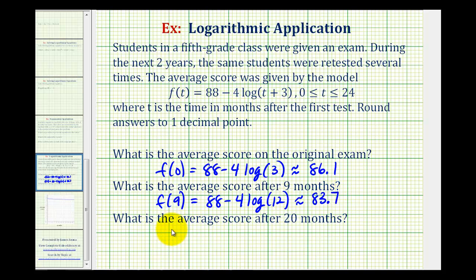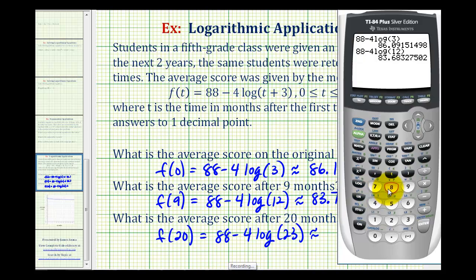And then for the last question, what is the average score after 20 months? They're telling us that t is equal to 20, so we need to determine the function value f(20), which would be 88 minus 4 times the common log of (t + 3), but now t is 20, so 20 plus 3 would be 23. Going back to the calculator one more time: 88 minus 4 common log of 23. And now the average score has dropped to approximately 82.6.